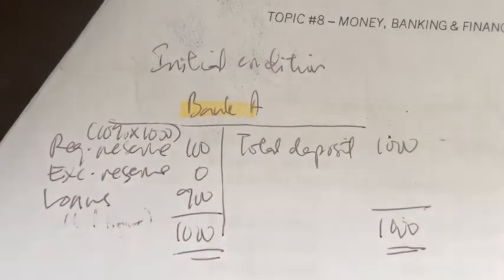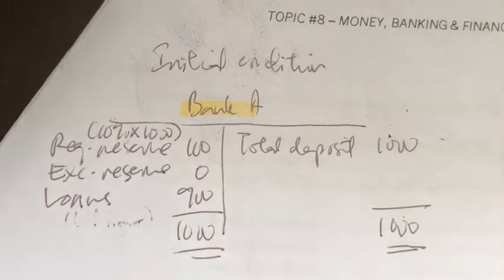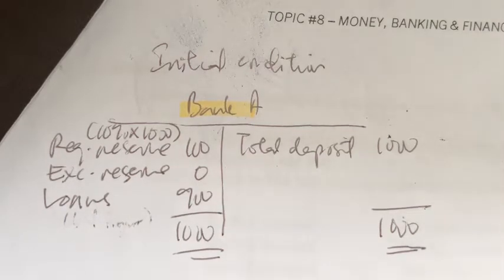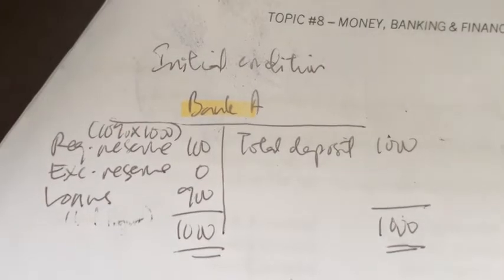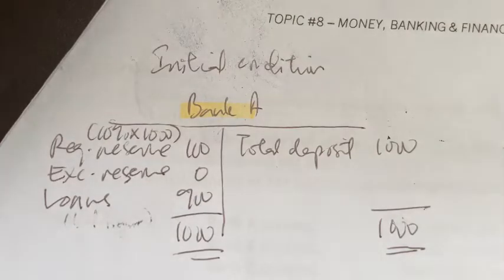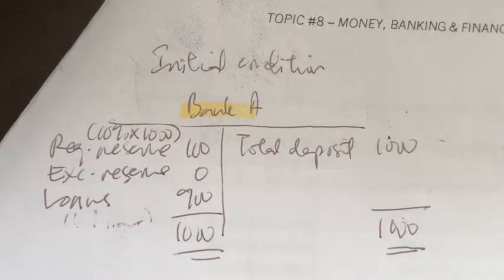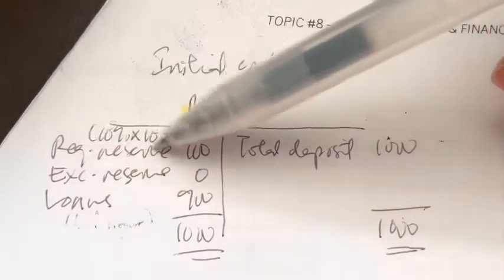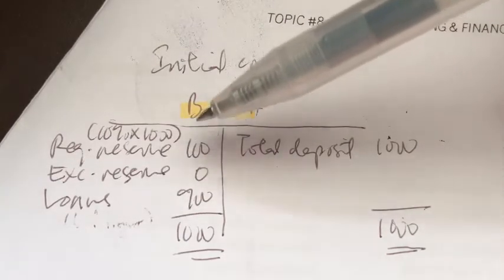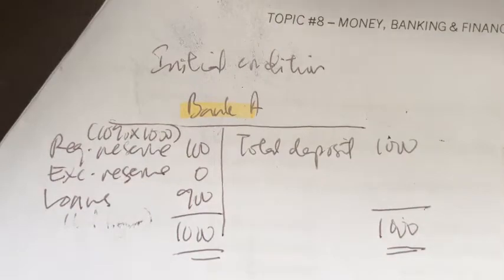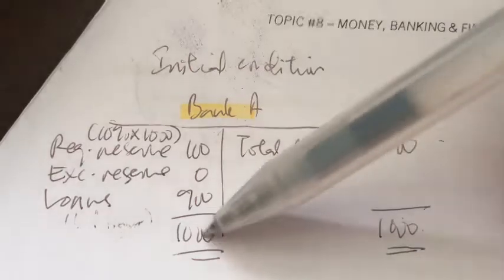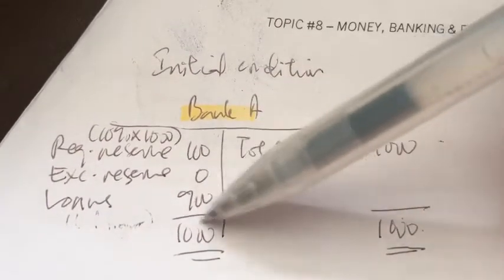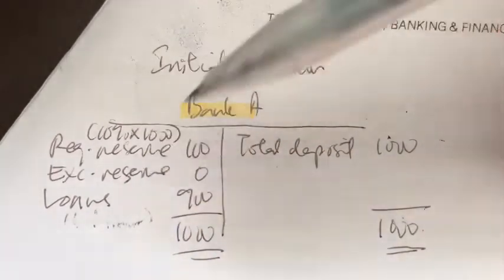I'm going to show you a series of accounts — I've already written them down in advance, so follow along. This is the initial condition for Bank A. As per assumption, every bank has an initial deposit of 1,000 ringgit. The reserve requirement is 10%, so 100 goes to the required reserve — meaning 100 ringgit from Bank A goes to the central bank. The accounts must balance: 1,000 on both sides. With 100 in required reserve, 900 is available to give out as loans.